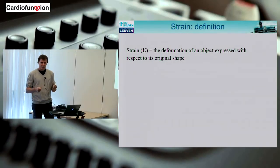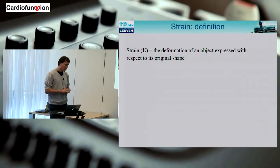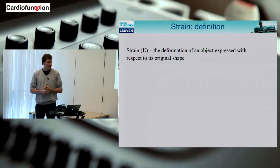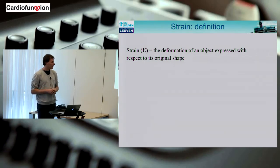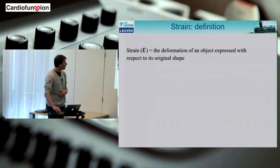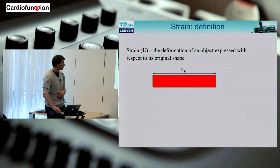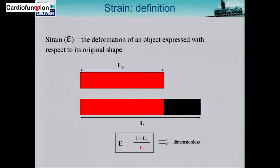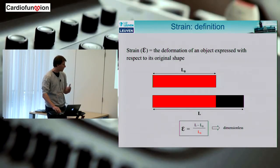The entire lecture is about strain imaging, so it's critically important that we're all on the same level regarding nomenclature. Even in engineering there are different ways of defining strain. Strain — typically referred to with the Greek symbol epsilon — is the deformation of an object with respect to its original shape. For a 1D bar of length L0 that deforms to length L, strain is simply the length change L minus L0 relative to the original length L0. It's dimensionless and most often expressed as a percentage.